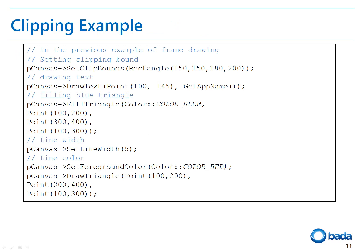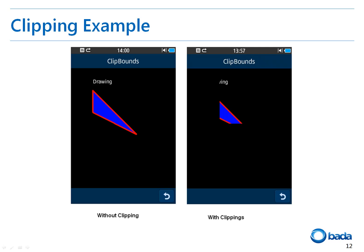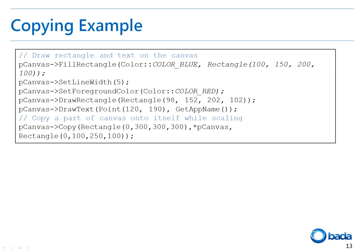This example shows the role of clip bounds for the canvas. Clip bounds is set using the SetClipBounds function, and the triangle is drawn beyond the boundary of the clip bounds. We'll look at the output now. We can easily notice that the portion outside the clip bounds is not drawn. The image on the left is without clipping, and the one on the right is with clipping. By resizing the rectangle, you can implement a magnification or shrinking effect.